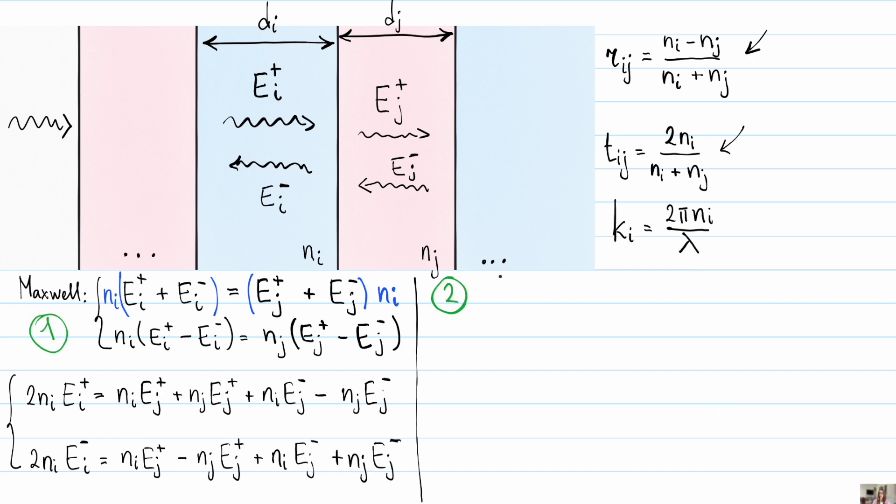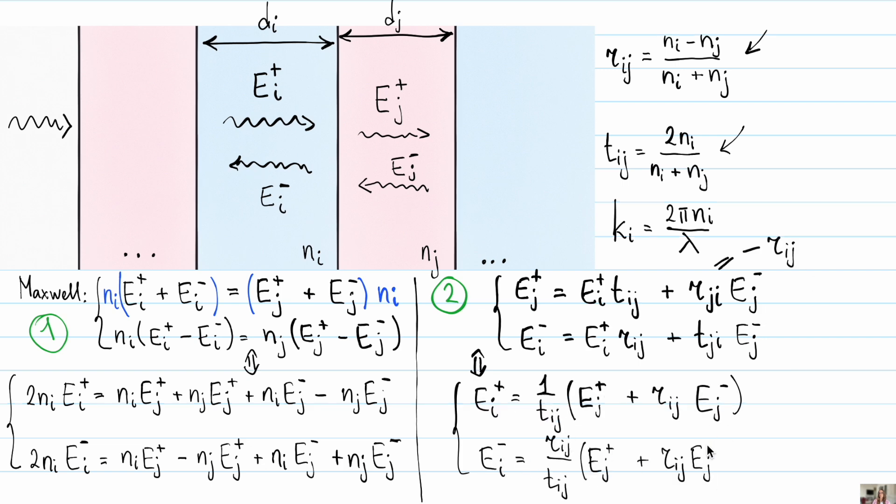On the other hand, we can take another view. The forward propagating field should be a sum of the reflected field and the transmitted field from the neighboring region. Let me know in the comments which of these approaches feels more intuitive to you.